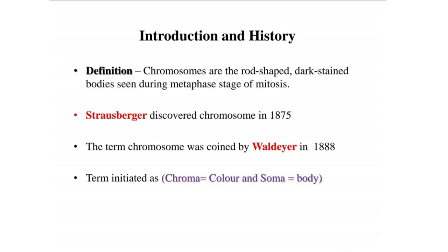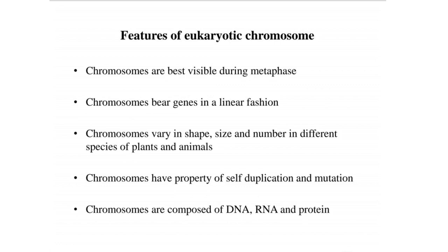In 1875, the term chromosome was coined by Waldeyer in 1888. The term originates from 'chroma' meaning color and 'soma' meaning body, so chromosomes are commonly called colored bodies.